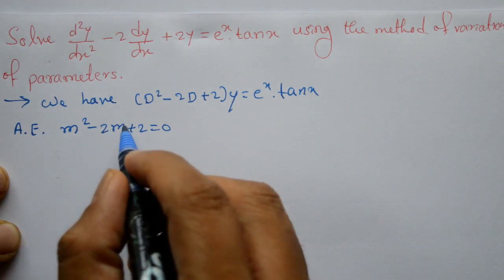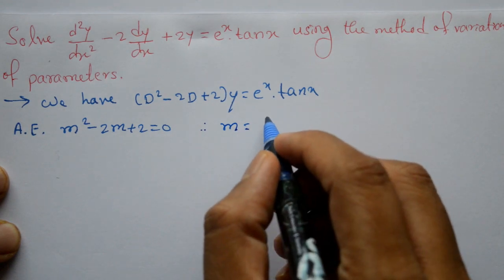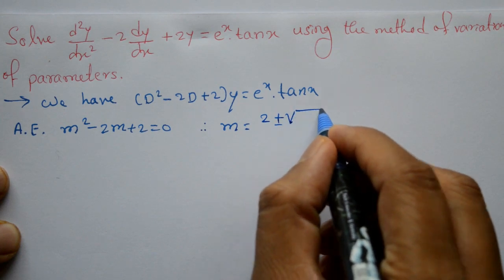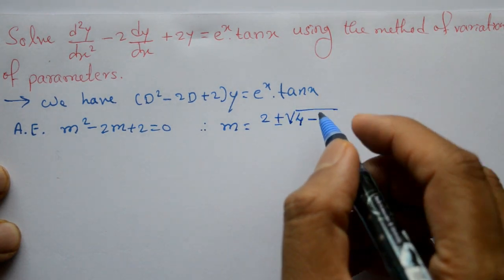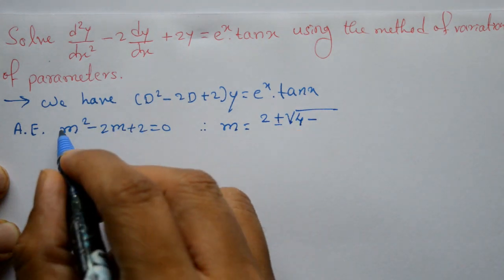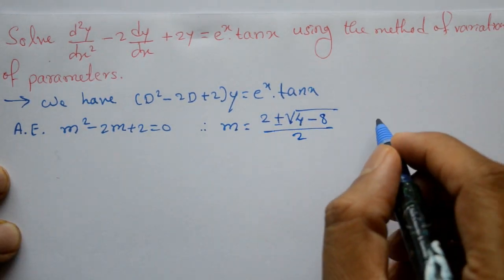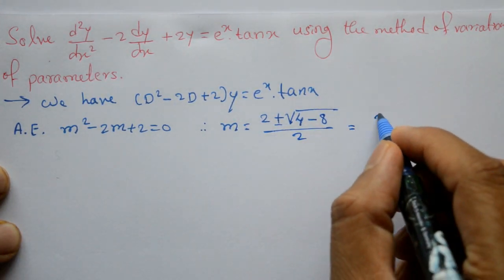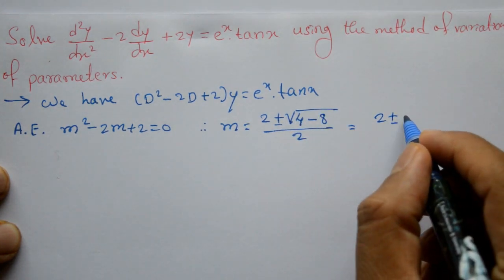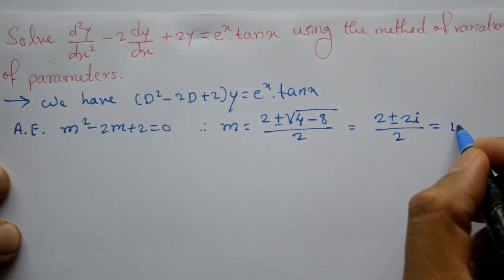Here a is 1, b is minus 2, and c is 2. Therefore m equals 2 plus or minus square root of (4 minus 4 times 1 times 2) divided by 2, which gives 2 plus or minus square root of minus 4, divided by 2. Square root of minus 4 is 2i, so we get 1 plus or minus i.